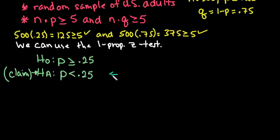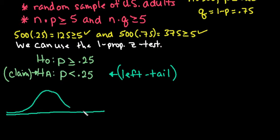For this, we always look at the alternative to determine the tail of the test that we will be shading. This is a left tail test, which means that when I draw my model, I am going to shade the left tail. Less than always means down here. Greater than always is to the right.